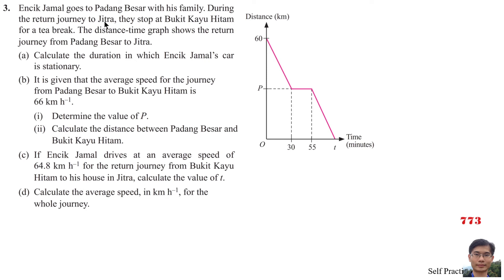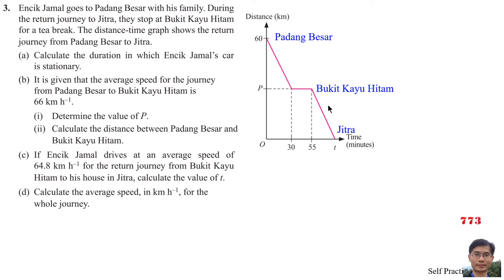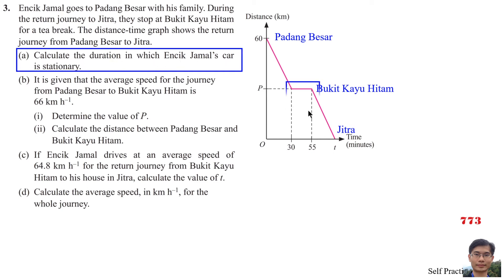Question 3: Injit Jamal goes to Badambusa with his family. During the return journey to Jitra, they stopped at Bukit Gaiohitam for a tea break. The Distance-Time Graph shows the return journey from Badambusa to Jitra. Badambusa is at the start, then Bukit Gaiohitam where they rested (distance unchanged), and finally Jitra. Part A: Calculate the duration during which Injit Jamal's car is stationary. That is 55 minus 30, giving 25 minutes.